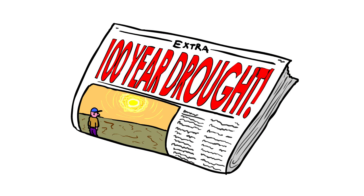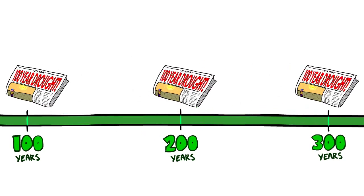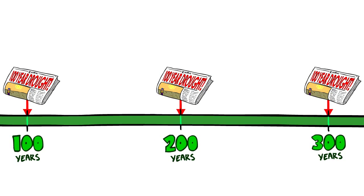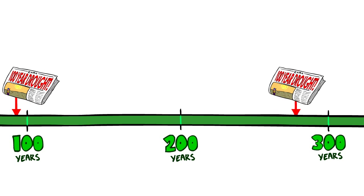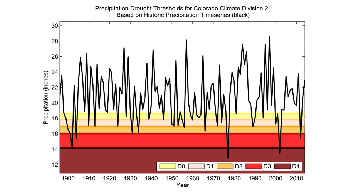However, just because a 100-year drought is expected once in 100 years doesn't mean you'll get that drought every 100 years like clockwork. It's possible to have two 100-year droughts in a very short time span, or not to see one for over 200 years. Looking at 120 years of annual precipitation values from western Colorado, D4 conditions only occurred two to three times over this period, but two of them happened within about 25 years of each other.